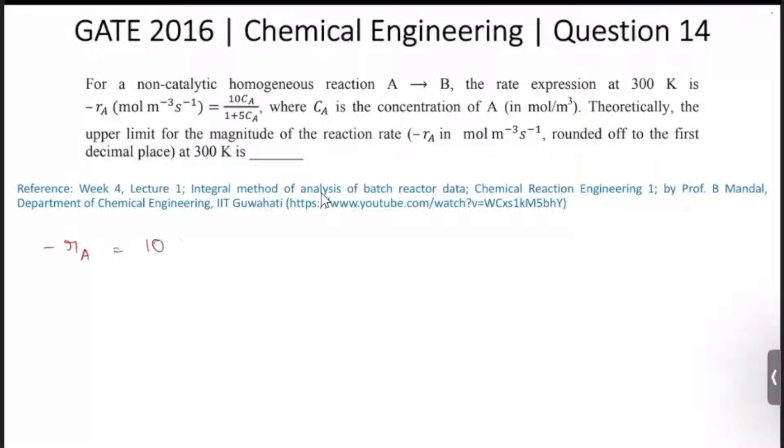So here they are given that the reaction rate minus r_A is equal to 10 C_A by 1 plus 5 C_A. So this is a shifting order reaction. So that means there are two cases here. Case 1: when C_A is very high.